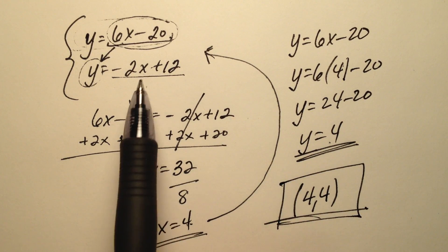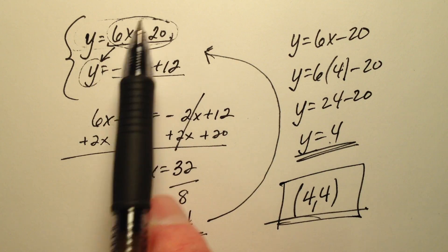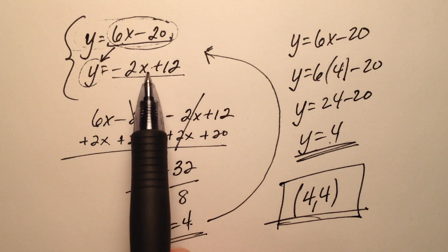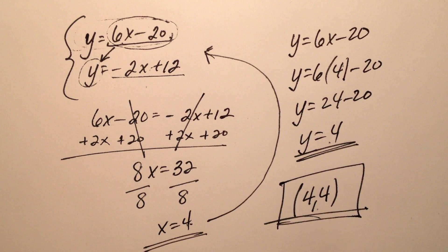If I was going to classify this linear system, it would classify as consistent and independent because these two lines intersect at a single point and that ordered pair is 4, 4.